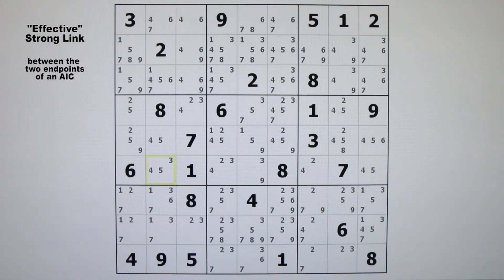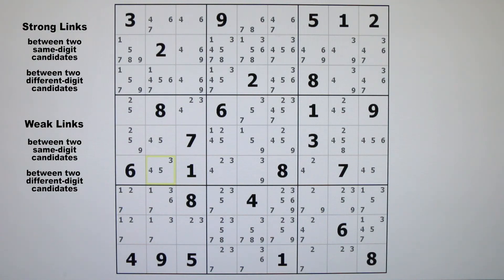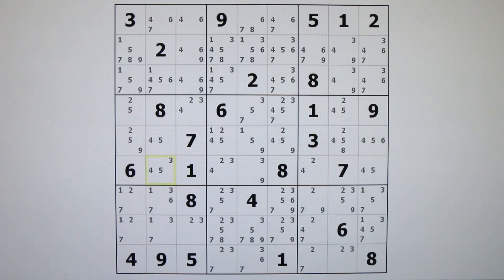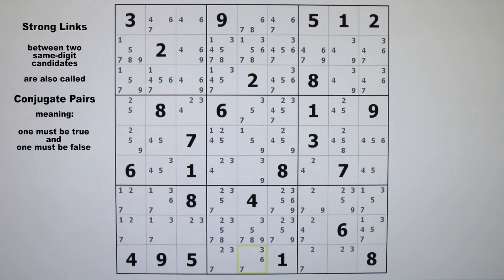The two endpoints of an AIC do not necessarily have to see each other, and it is also possible for both of those endpoint candidates to be true simultaneously. This type of strong link falls into an entirely different category, which is why I have a special name for it. As long as we take it step by step, it will all come together. Basically, we have four types of conventional links: strong links between candidates that are the same digit, strong links between candidates that are different digits, weak links between candidates that are the same digit, and weak links between candidates that are different digits.